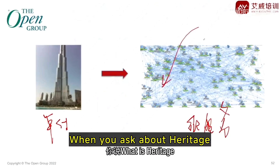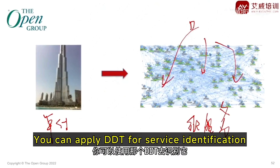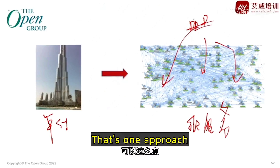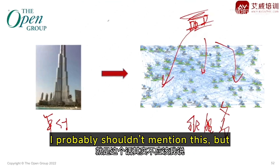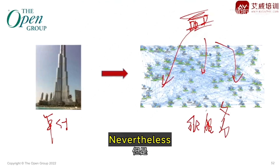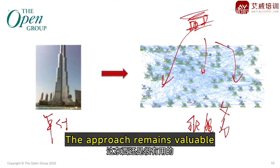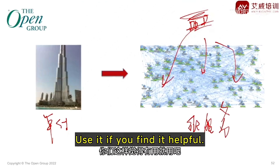The next step is microservice identification. You can apply DDT for service identification — that's one approach. However, TOGAF isn't particularly compatible with this approach. TOGAF has some resistance to this method, nevertheless the approach remains valuable. Use it if you find it helpful.